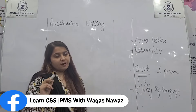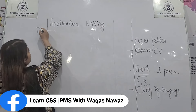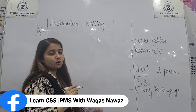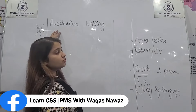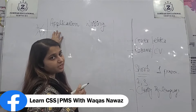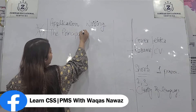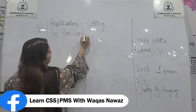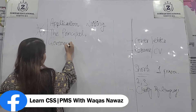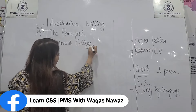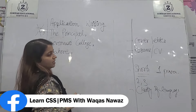Coming to the sequence and pattern of application writing — previously we used to start with the word 'To,' but now that word is totally skipped. We start directly with the addressee. For example: 'The Principal,' — where both 'T' and 'P' are capitalized — then 'Government College,' comma, 'Lahore,' full stop. This is the top structure we have to follow.